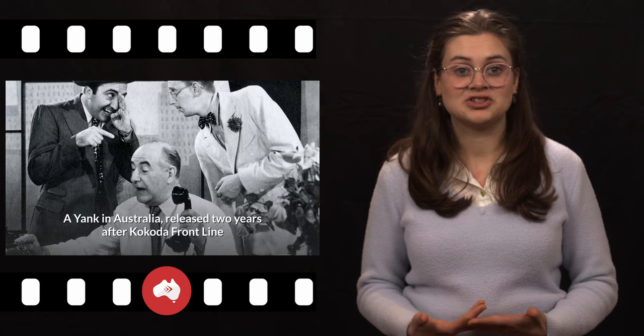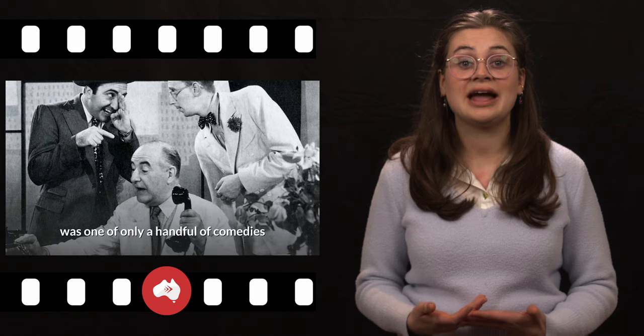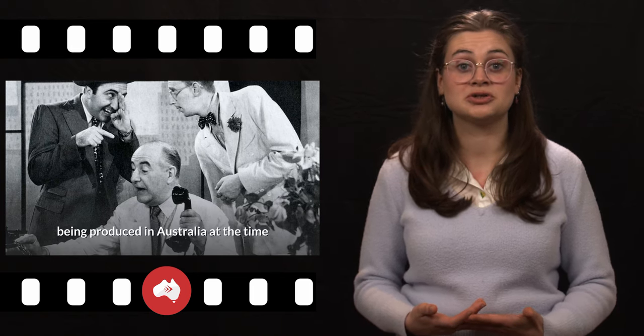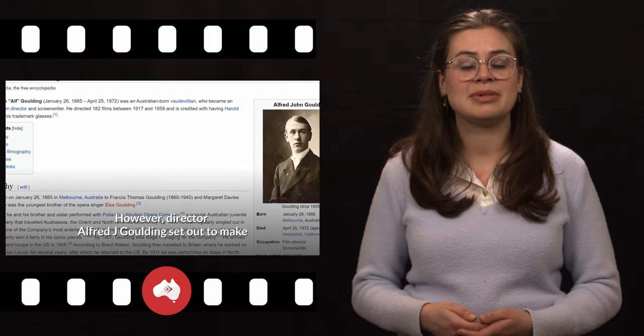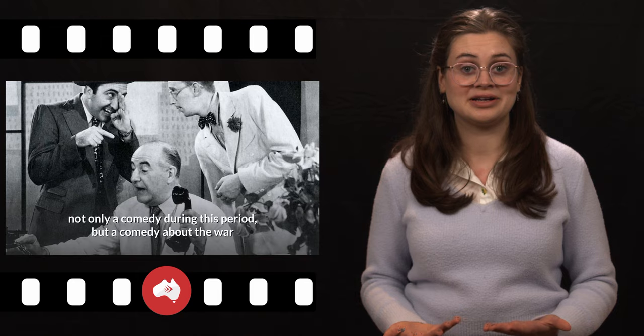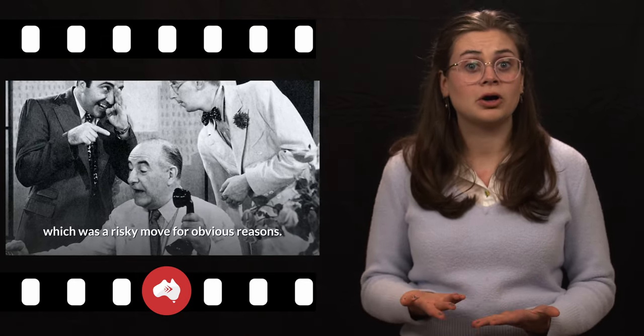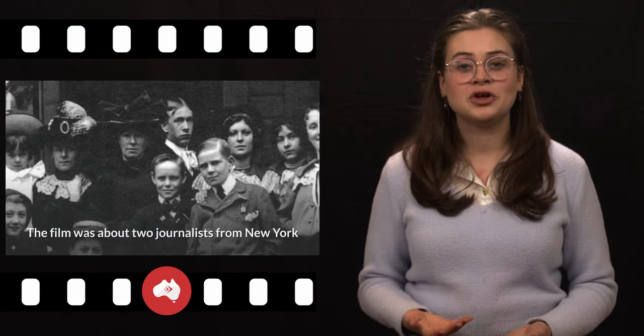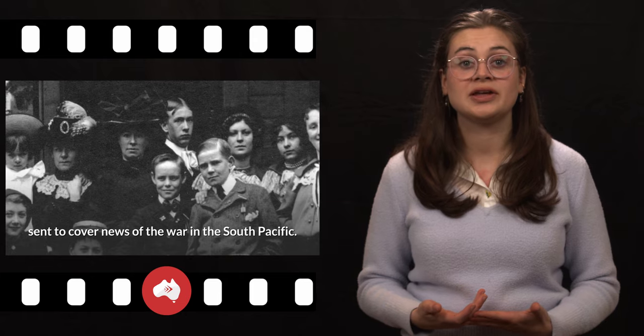A Yank in Australia, released two years after Kokoda Frontline, was one of only a handful of comedies being produced in Australia at the time, most likely due to the seriousness generated by the climate of war. However, director Alfred J. Golding set out to make not only a comedy during this period, but a comedy about the war, which was a risky move for obvious reasons.